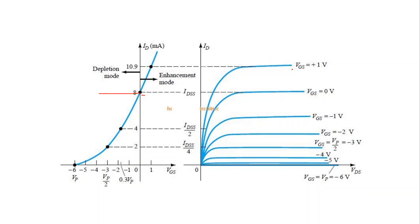Then for VGS equal to 1 volt, which is a positive value, we have an ID of 10.9 milliampere. So for VGS greater than 0 volt, or for ID greater than IDSS, this is called the enhancement mode of the depletion MOSFET.